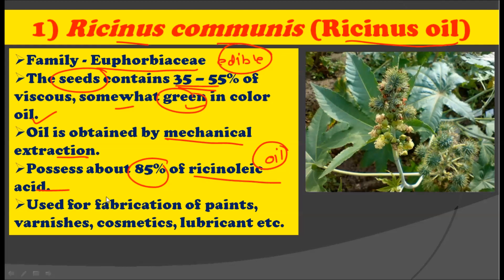Ricinus communis oil is used for the fabrication of paints, varnishes, cosmetics, and lubricants. So to summarize: Ricinus communis belongs to the family Euphorbiaceae, the seeds contain 35 to 55% oil, extracted by mechanical extraction. The oil contains ricinoleic acid at the level of 85%, and it is used for the fabrication of paints, varnishes, cosmetics, and lubricants.